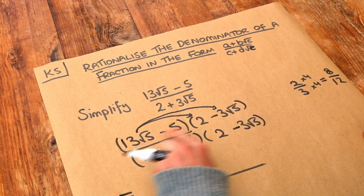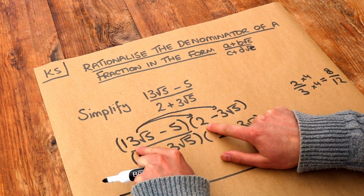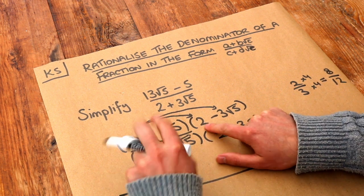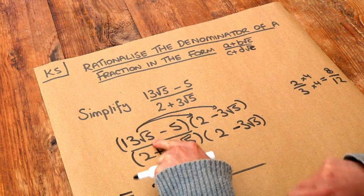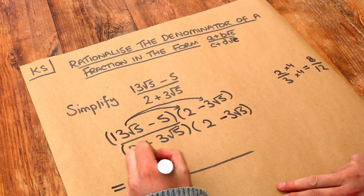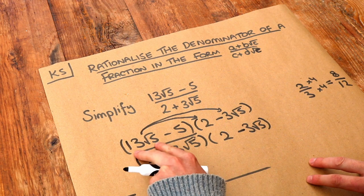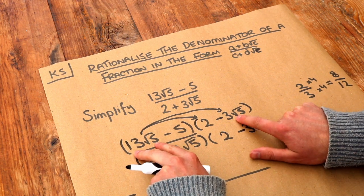13 lots of root 5 times 2. Well remember, we multiply the non-surds first. 13 times 2 is 26, and then we multiply the surds. We've only got the root 5 there, so it's root 5. And now we do 13 root 5 times minus 3 root 5.